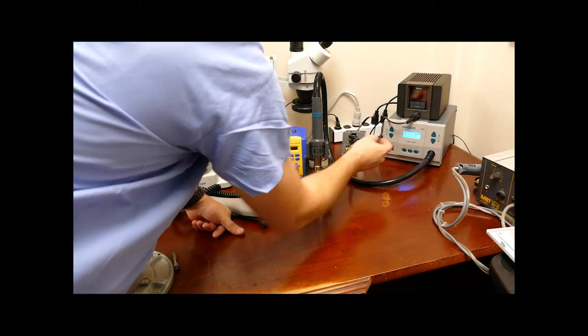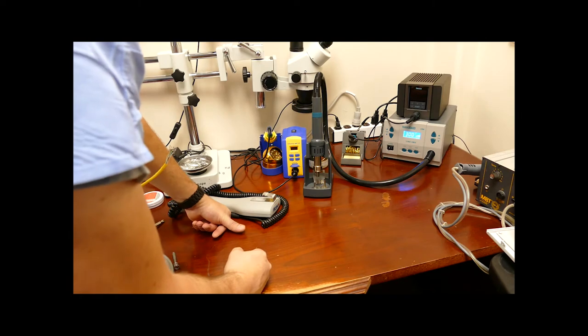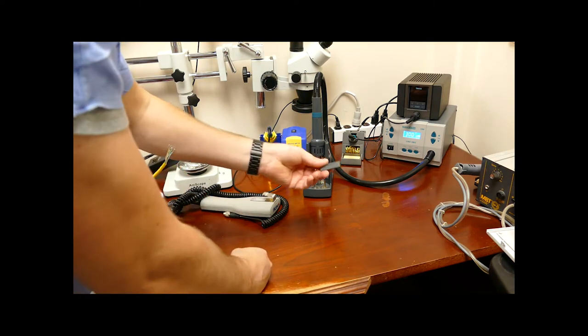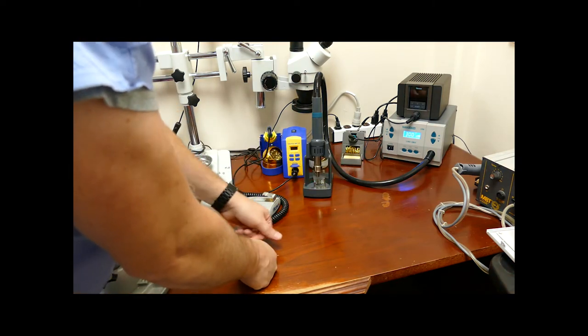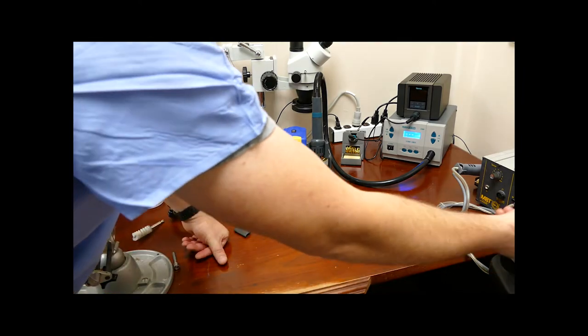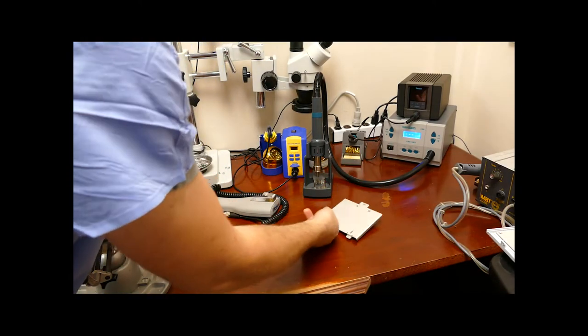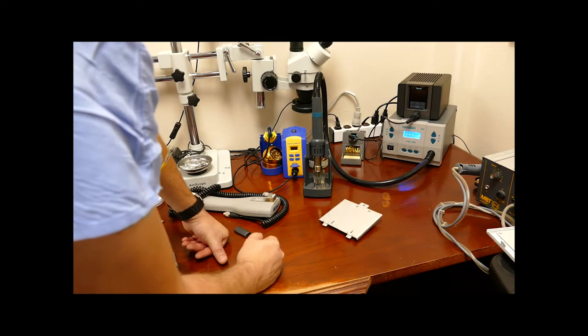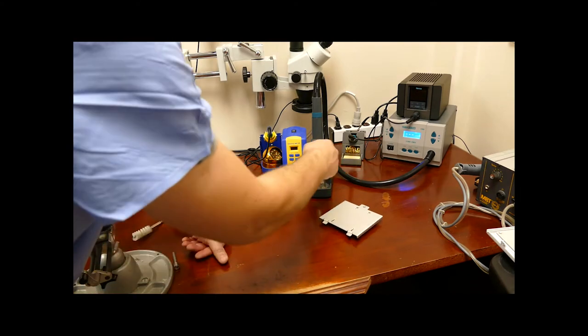My middle button that I have set at 300 degrees, I'll use for things like larger heat shrink tube. Or if I'm peeling a label on something like a piece of aluminum, the aluminum will conduct a lot of heat, so you have to up your initial temperature.